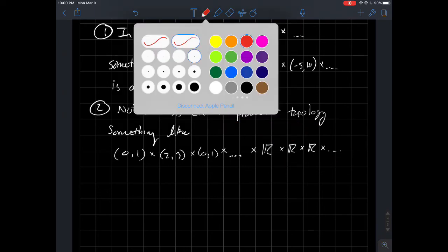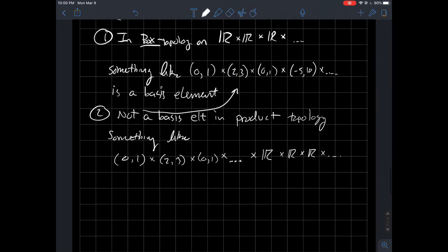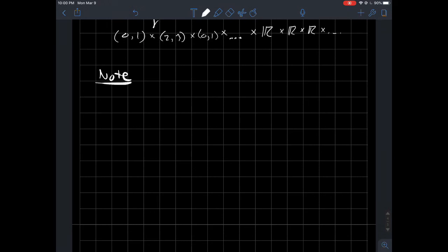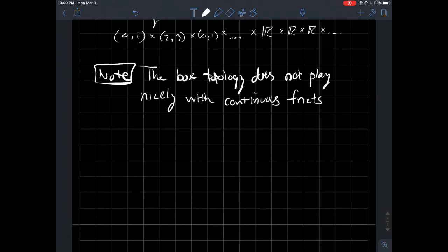Why is one preferred over the other? The second one is actually a little bit better behaved. The box topology does not play nicely with continuous functions. A nice concept of what we take for granted as being continuous actually breaks down in the box topology. The product topology is in some sense the smallest topology on a product space that will play nicely with continuous functions.